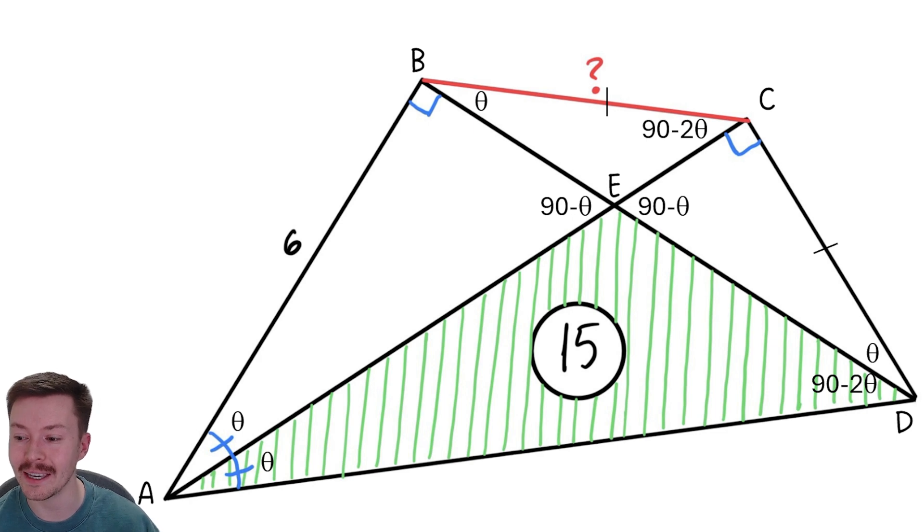Okay, now from there what we can do is we know that these two sides, so B to C and C to D, are equal, and that's because triangle BDC is isosceles. We've got base angles that are equal, the thetas there, okay, at B and at D.